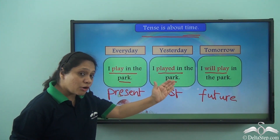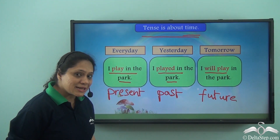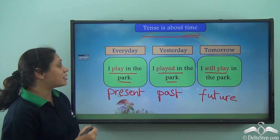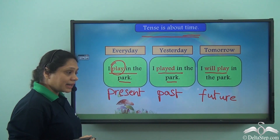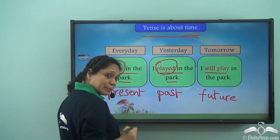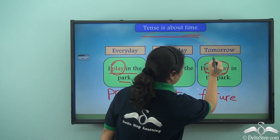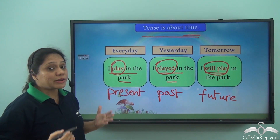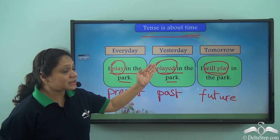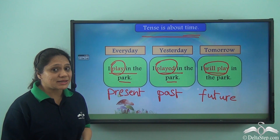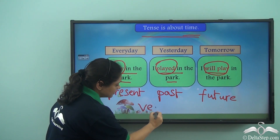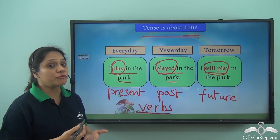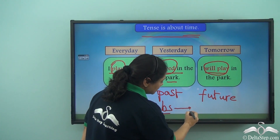Now if you are careful when you read the sentences, you will see that in these three sentences only the verb is changing: 'play', 'played', 'will play' — the rest of the sentence is the same. Only the verbs change. So what do we understand? That only the verbs tell us about the time of an action. So verbs tell us about tenses.